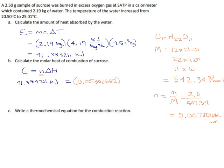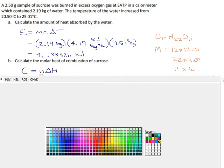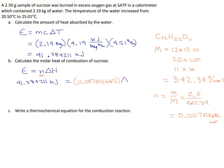0.007302682 times a delta H that we don't know, but that we want to find. Well, how do we get it? If we want to isolate delta H, we divide both sides by this 0.007. So 41.384211 divided by 0.007302682.